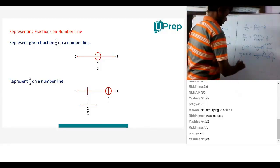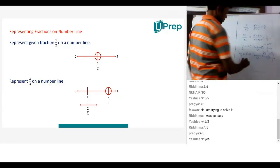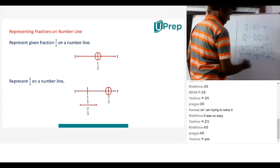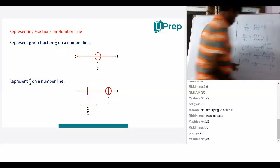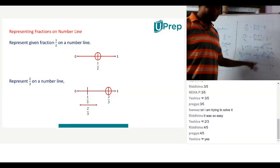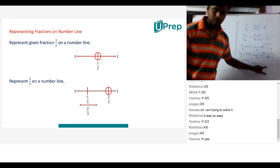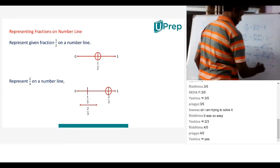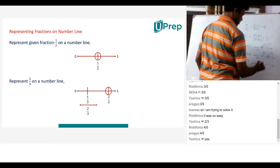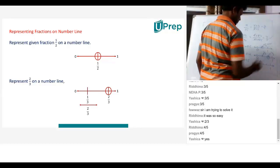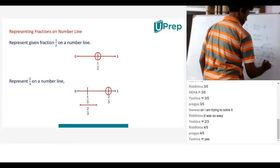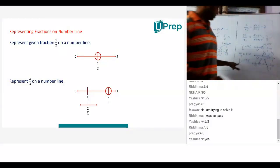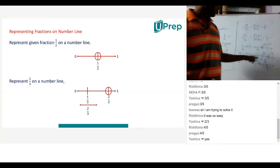Now if I give you 1 by 4 — 1 by 4 is 0.25. How do I mark this on a number line? I know it lies between 0 and 1. Because there is 4 in the denominator, I divide the gap between 0 and 1 into 4 equal parts. So this is 0, this is 1 by 4, this is 2 by 4, and this is 3 by 4. Based on the number in the denominator, I divide the gap between 0 and 1.